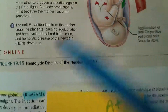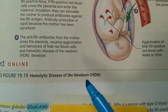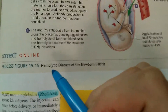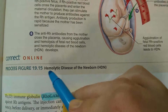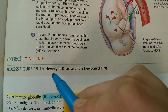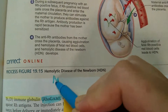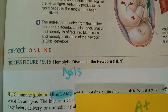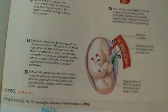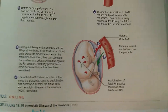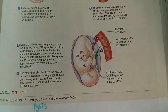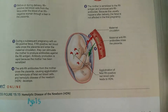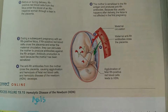Hemolytic means the breakdown of red blood cells. Hemo meaning blood, like hemoglobin, and lytic comes from the word lysis — L-Y-S-I-S — which means to break down or destroy. We don't want the baby's blood cells to be attacked or broken down, because that can lead to an anemic reaction, and the baby can have some serious health problems later on in life.